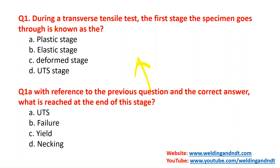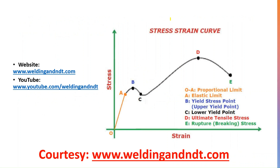During the transverse tensile test — or longitudinal tensile test — the first stage will be the elastic stage. During a tensile test, a stress-strain curve is plotted. From this curve you get the properties of the material. From 0 to point A, elasticity is present; this zone is called the elastic zone or elastic stage.